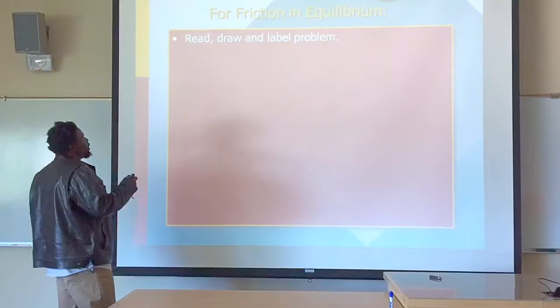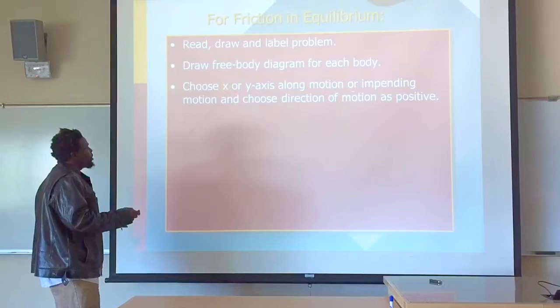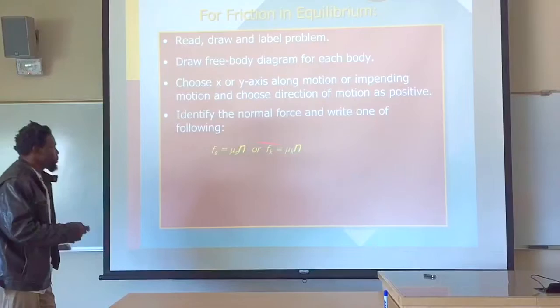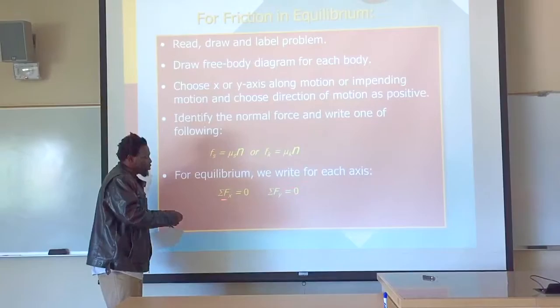When solving friction problems, we need to read, draw, and label the problem, and draw a free-body diagram for each body. We choose the x or y axis along the direction of motion or impeding motion, and choose the direction of motion as positive. We identify the normal force and write the relevant equations. For equilibrium, we write for each axis that the sum of forces in the x direction and the sum of forces in the y direction must equal zero. Then we solve for the unknown quantity.